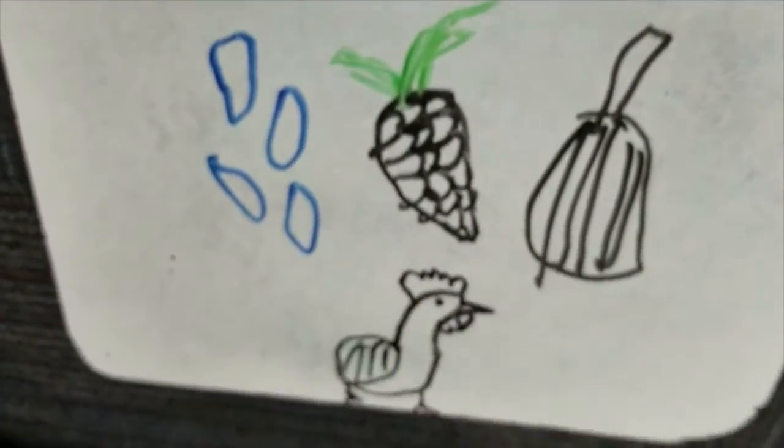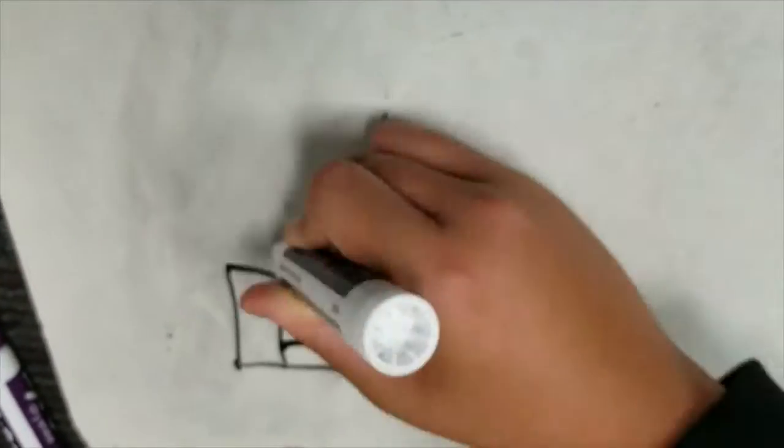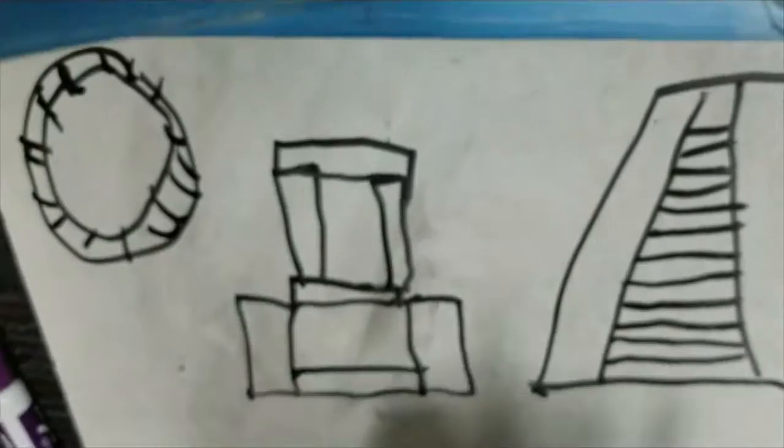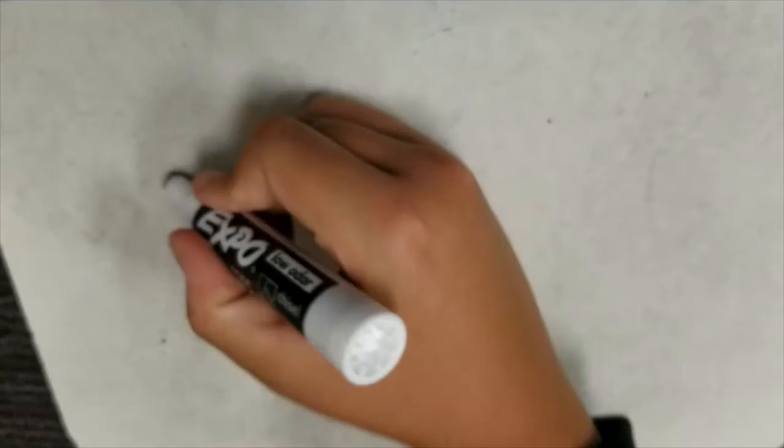They created plazas, temples, pyramids and arenas. One of their most famous pyramids is Chichen Itza. Chichen Itza was built in 800-900 AD. It was built of stone.